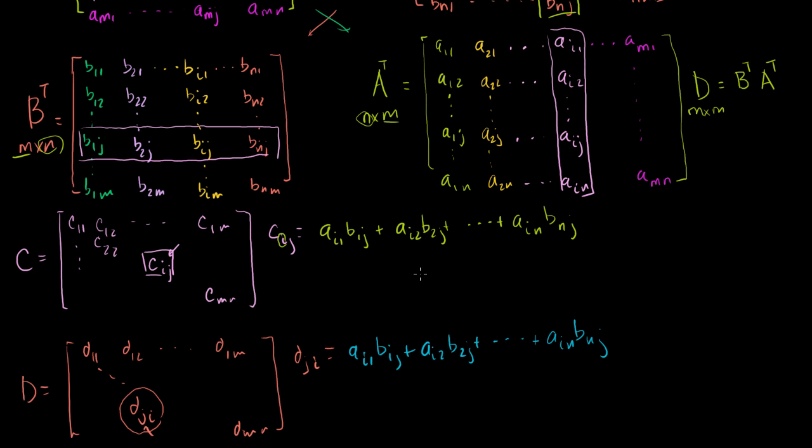Now notice something. These two things are equivalent. They're completely equivalent statements. The d sub ji is equivalent to c sub ij. Let me write that. So d, or I could write c sub ij is equivalent to d sub ji. Or another way you could say it is anything that's at row i, column j in c is now in row j, column i in d, and this is true for all the entries. True for all entries. I state as general as possible.